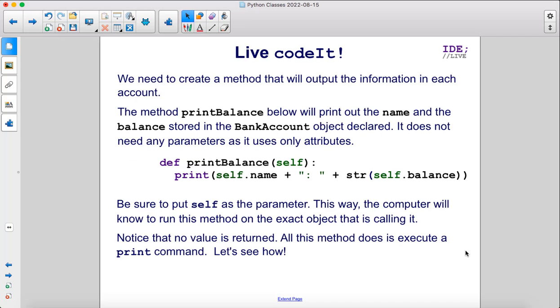We need to create a method that will output the information in each account. The method printBalance below will print out the name and the balance stored in the BankAccount object declared. It does not need any parameters as it uses only attributes. So here, we have self and we're going to print out whatever object is calling this method, its name and its balance.